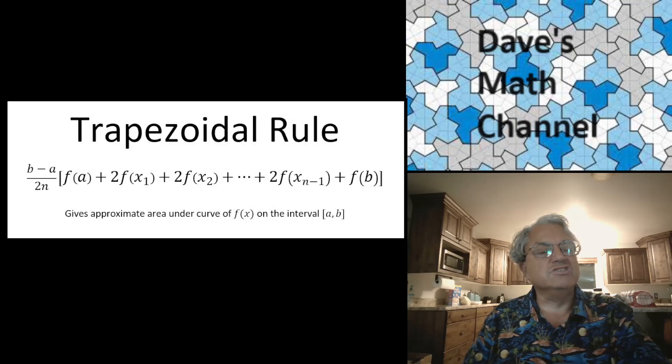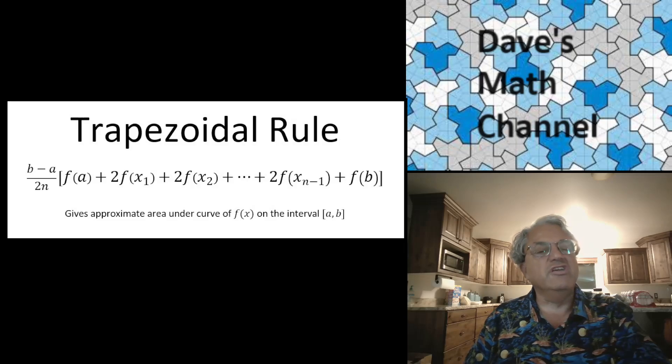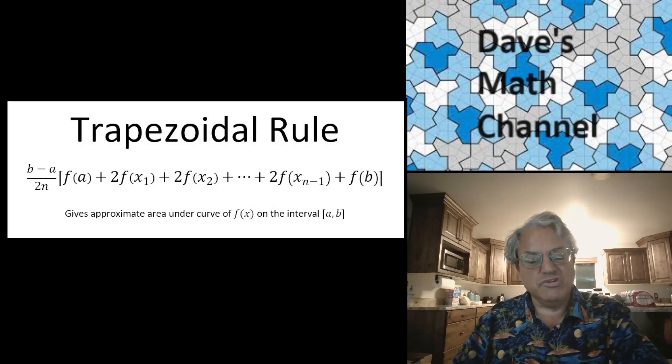And then this is what you get. So you get f of A. You actually get the values of f at the endpoints, f of A and f of B. Sometimes people write x0 for A and xN for B. But then all the other ones you have to multiply by 2. So that's the rule. Pretty easy to remember and pretty easy to apply.